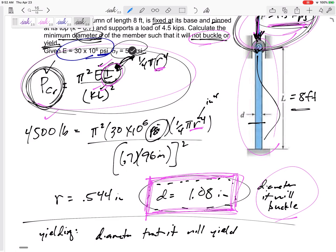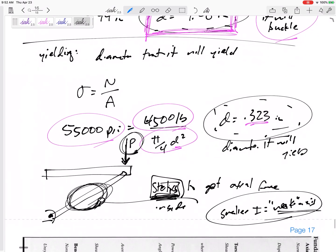So I would do this P critical for the weak axis. I'd do the weak I and I would have fixed-fixed for the K right there and then solve for P.